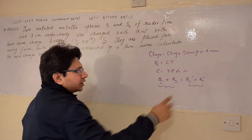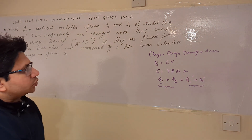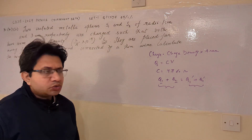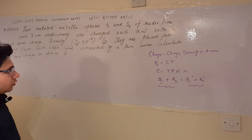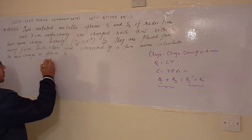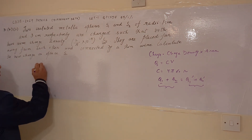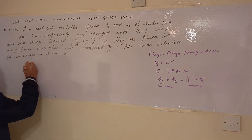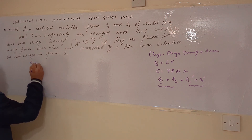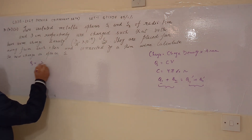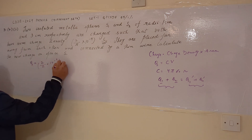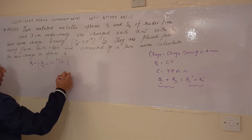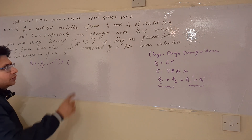This is after connecting by a thin wire, so the charge conservation principle is used. To solve this problem, for the first sphere, Q1 is given by the charge density 2/π × 10⁻⁹ multiplied by the area.